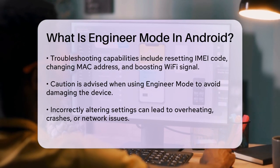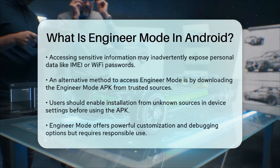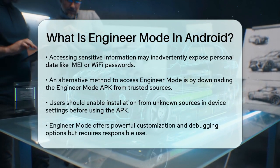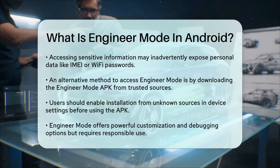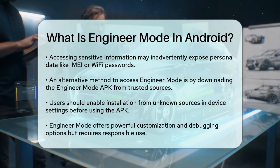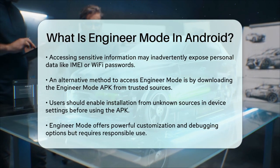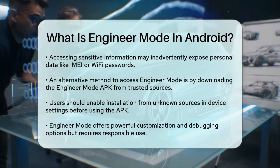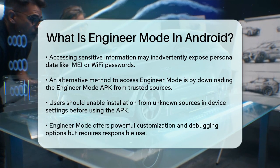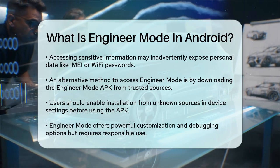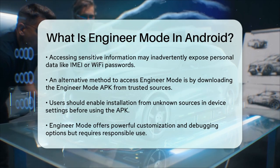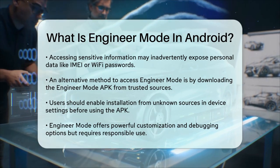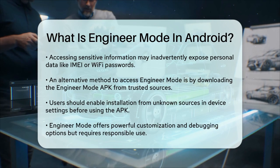Another risk is exposing personal or sensitive data. When accessing certain information through Engineer Mode, you might inadvertently reveal data like your IMEI code, MAC address, or Wi-Fi password. If you prefer not to use the dialer code, you can download and install the Engineer Mode APK from a trusted website. Just make sure to enable the option to install apps from unknown sources in your device's settings.